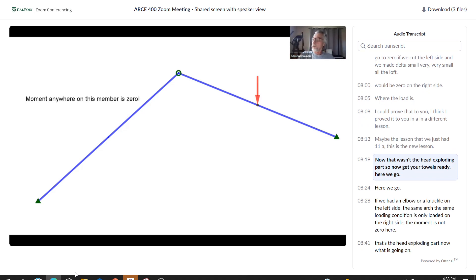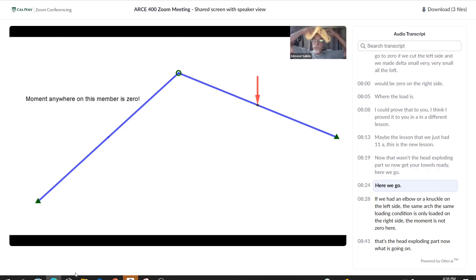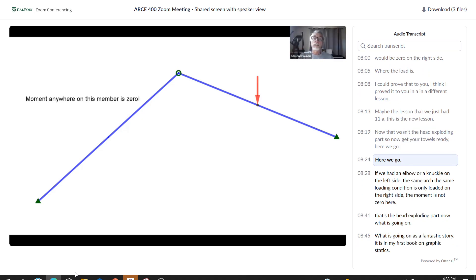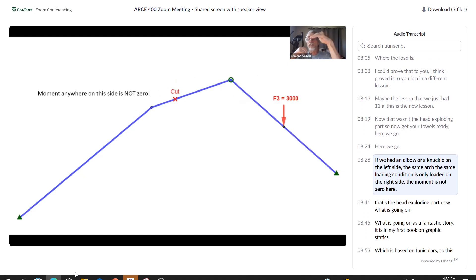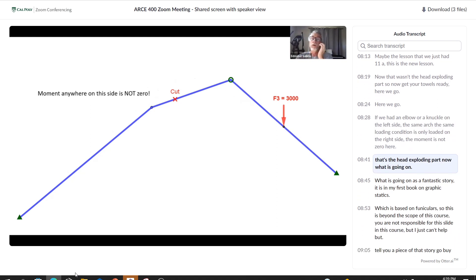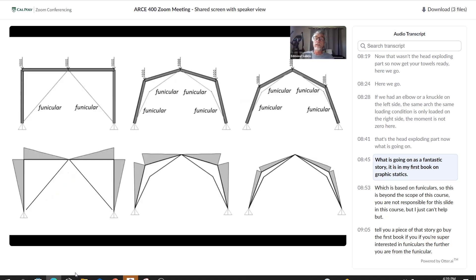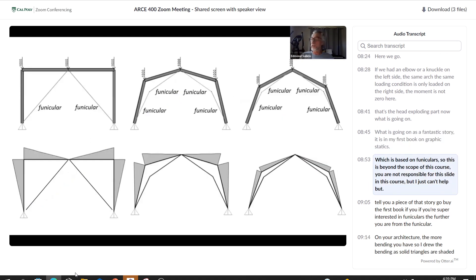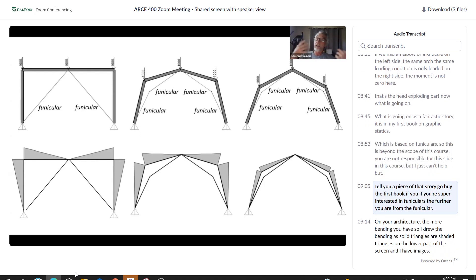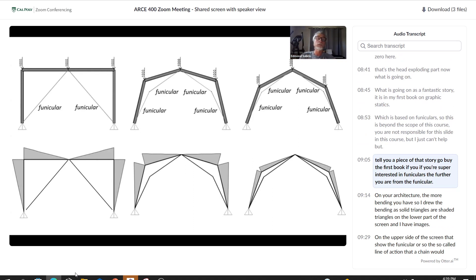Now get your towels ready, here we go. If we had an elbow or a knuckle on the left side, the same arch, the same loading condition, it's only loaded on the right side. The moment is not zero here. That's the head exploding part. What is going on is a fantastic story. It is in the first book on graphic statics which is based on funiculars. So this is beyond the scope of this course. You are not responsible for this slide.